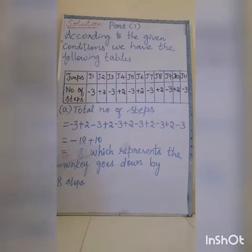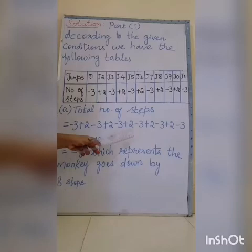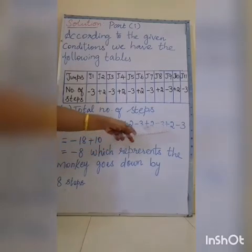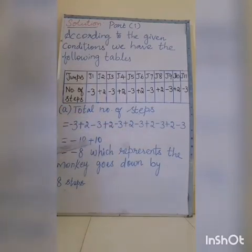Now we add the positive integers. How many positive integers in this sum? 5 positive integers. 2 plus 2 is 4, 4 plus 2 is 6, 6 plus 2 is 8, 8 plus 2 is 10. So plus 10. Add the positive integers, but put the positive sign.